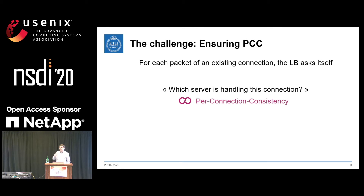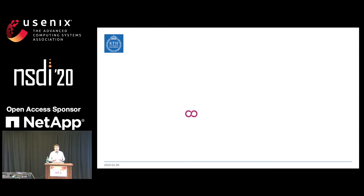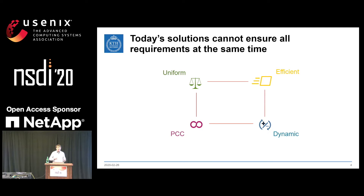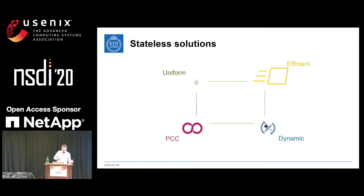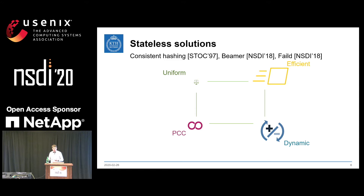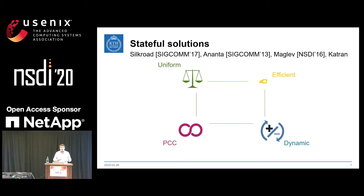The challenge is really per-connection consistency, because for each packet of an existing connection the load balancer must ask itself: which server is handling this connection? The problem is that today's solutions cannot ensure all of those requirements at the same time. For instance, it's very easy to build an efficient load balancer using hashing mechanisms like ECMP, but it will break connections when you add or remove servers. If you want uniformity, you need a stateful load balancer that remembers, in a huge table, which server was selected for every connection — allowing uniformity and dynamicity, but much less efficiently due to resource exhaustion.